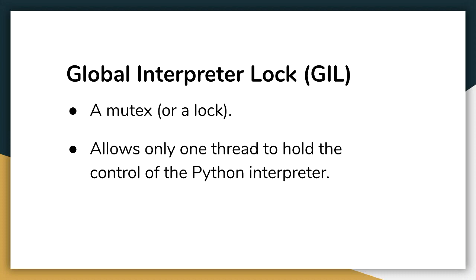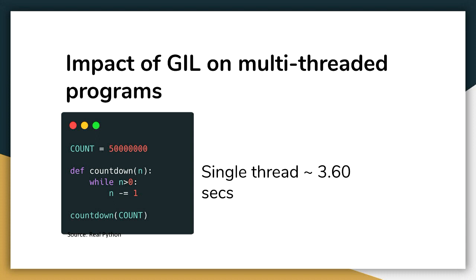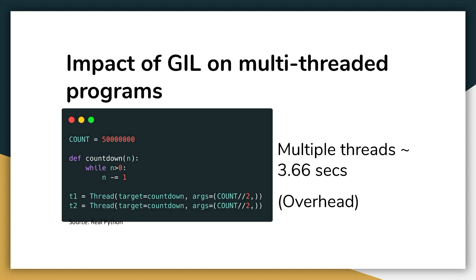Any CPU-bound program you have in Python is going to be effectively single-threaded because of the GIL. Let's see how the GIL impacts multi-threaded programs. I have a simple countdown function with a count of around 500 million. Using a single thread it takes around 4 seconds. But if I use multiple threads, by usual logic the performance should get better — however it's 3.66 seconds now, almost the same but slightly more.